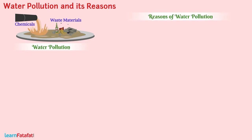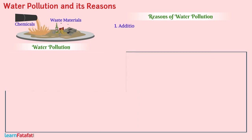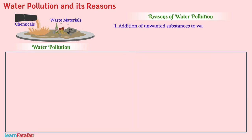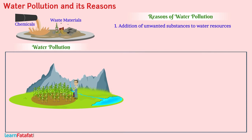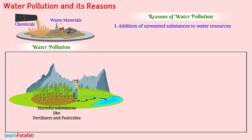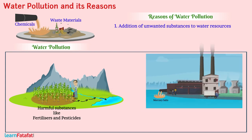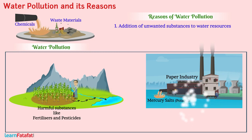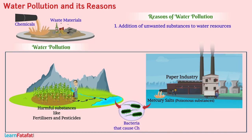One reason for water pollution is the addition of unwanted substances to water resources. Harmful substances like fertilizers and pesticides get washed off from the fields into the water resources. Similarly, mercury salts from paper industries are many times passed into sources of water. These are poisonous substances and may also contain bacteria that cause cholera.